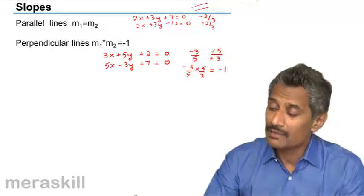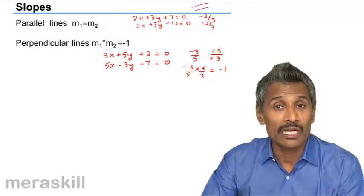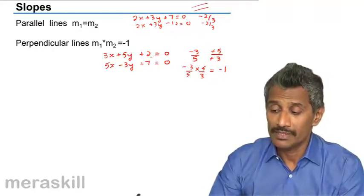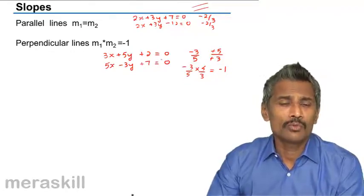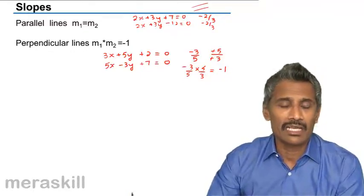Whenever two lines are parallel, the slopes are said to be equal. Similarly, whenever two or more lines coincide with each other, then that will be equal slopes.